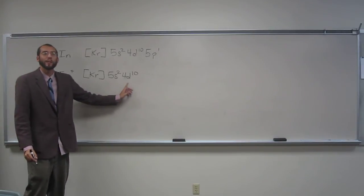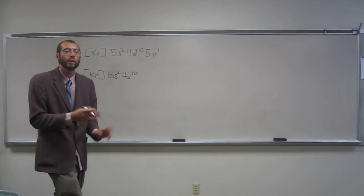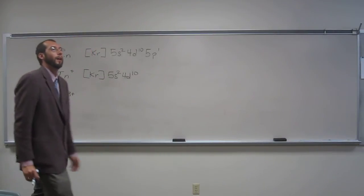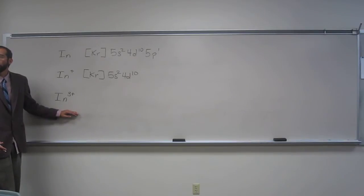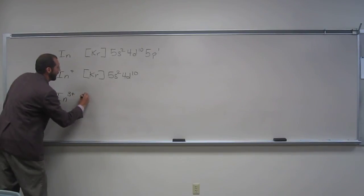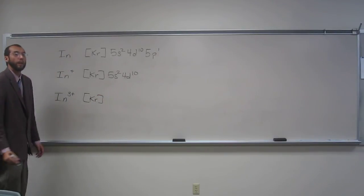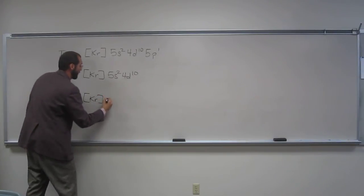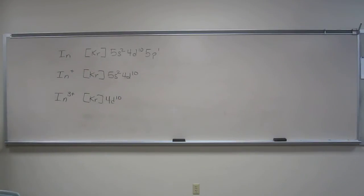You know that those filled D's are stable. We've talked about copper, we've talked about silver, we've talked about gold. And what's the electron configuration for this guy? Is it just Kr? No. So tell me, what is it? Kr 4d10. So that's the electron configuration for the second ion.